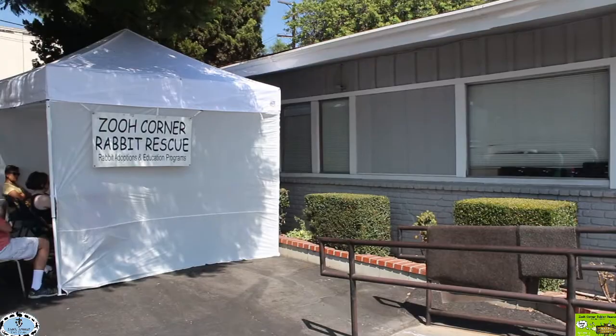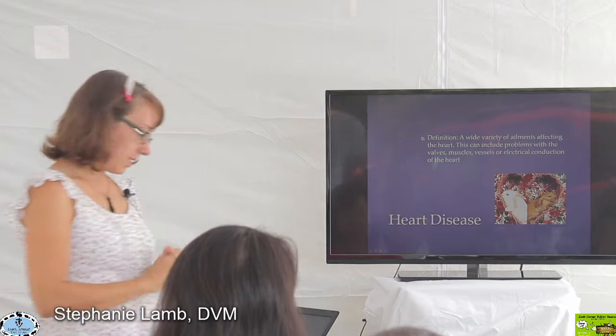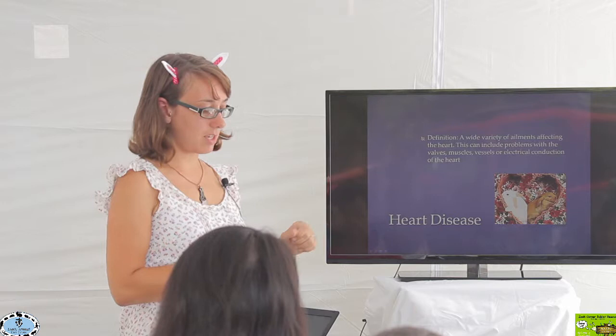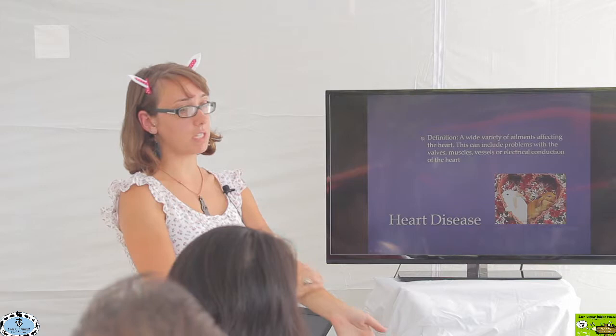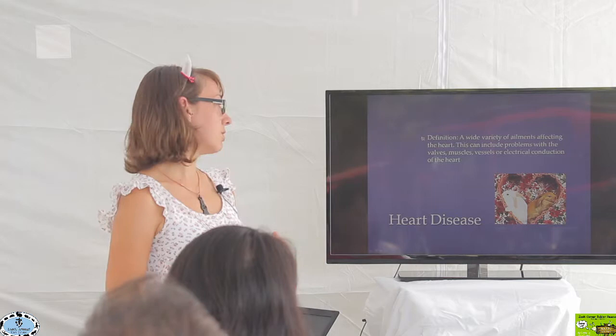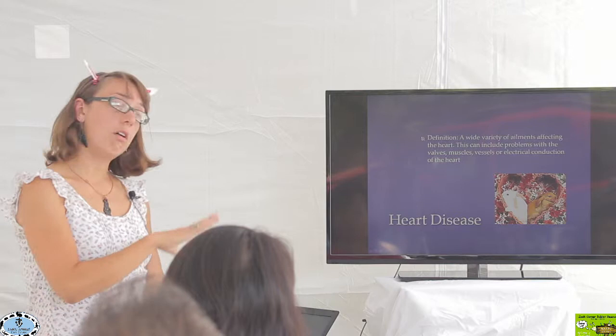Alright, and then the last thing that we're going to talk about that's common in rabbits is heart disease. When I put the definition of heart disease, heart disease is really something that's a broad topic. There are many different problems you can have with the heart, so it's really a wide variety of ailments that can affect the heart and can include problems with the valves or the muscles, with the vessels. It can have problems with the electrical conduction of the heart.